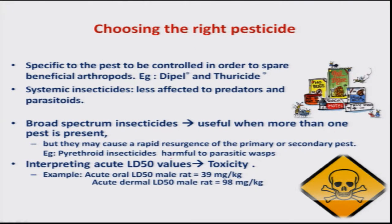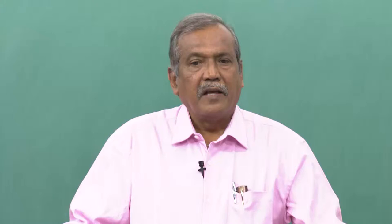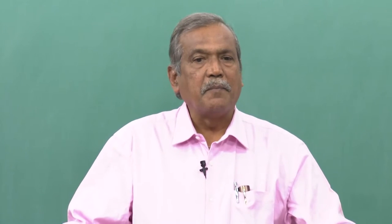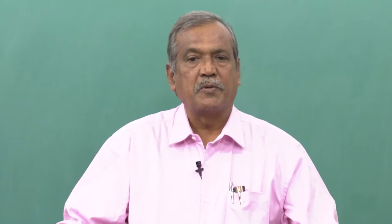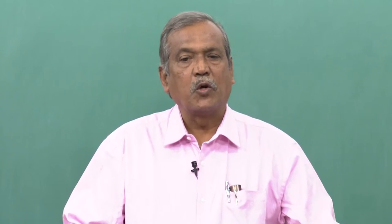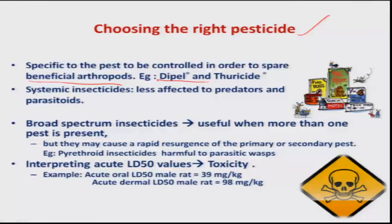Coming to the first one — choosing the right pesticide. A specific pest has a specific insecticide in order to spare or protect the beneficial arthropods existing in the ecosystem. For biting and chewing insects in general, any contact insecticide can be used, or microbial insecticides work better. For example, commercial microbials like Dipel and Thuricide are available in the market. They increase the efficacy by knocking down biting and chewing insects while sparing the natural enemies.